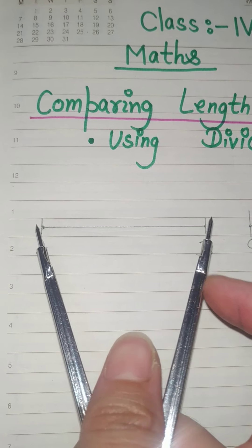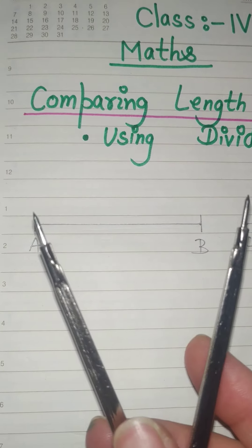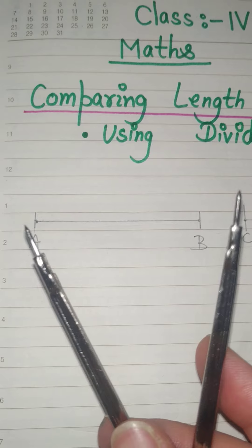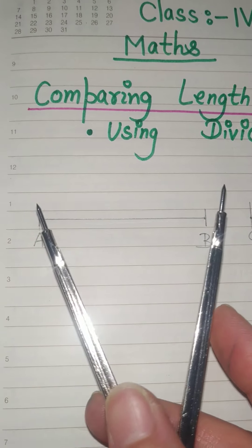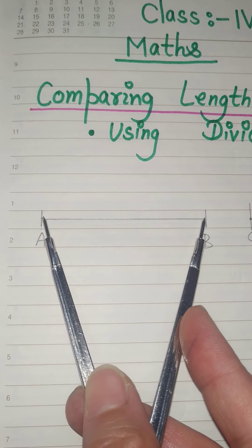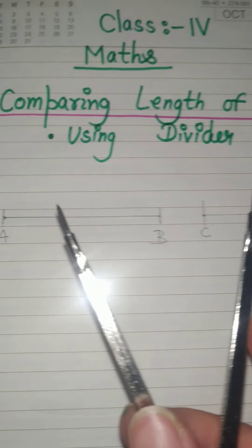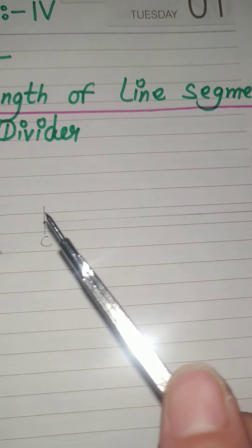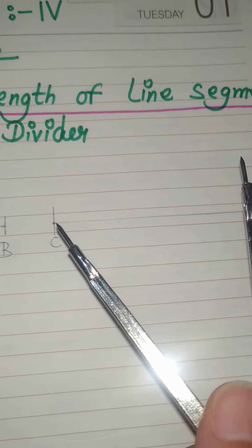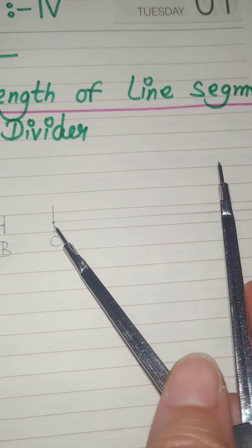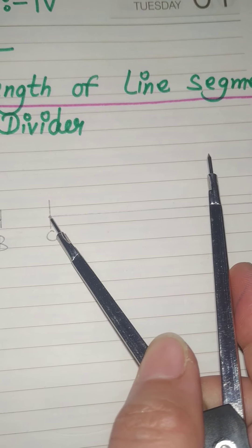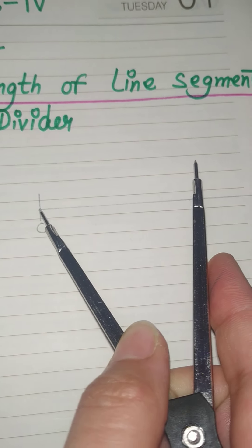So you have to lift the divider but don't close or open it. So you have to lift the divider and now keep one point of this divider on the end point of the another line segment.